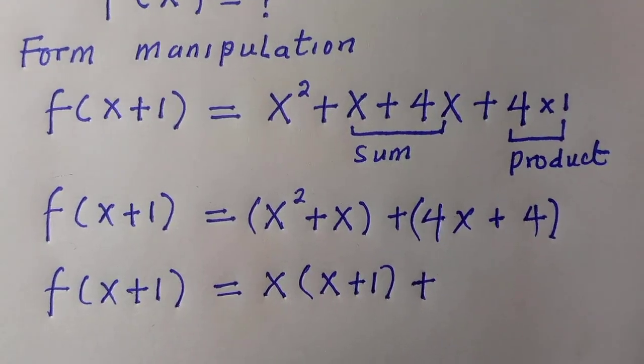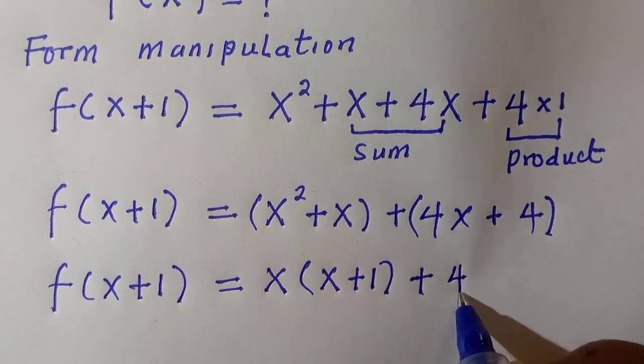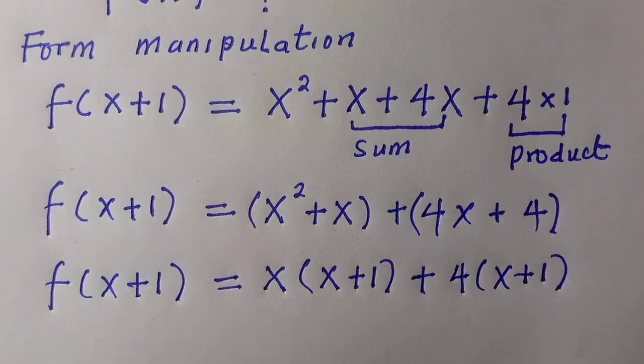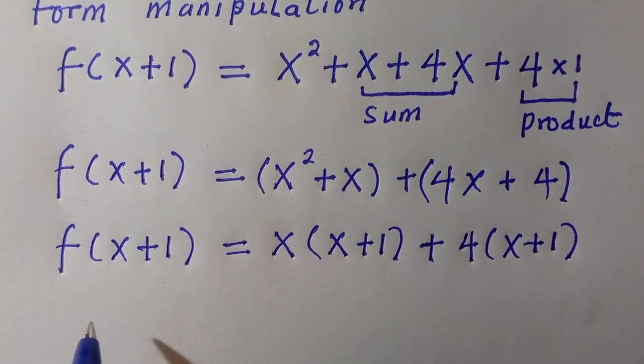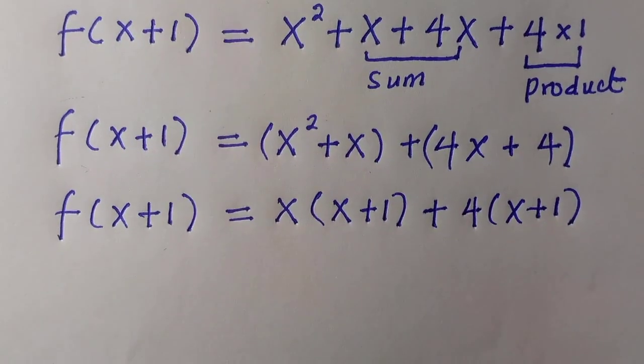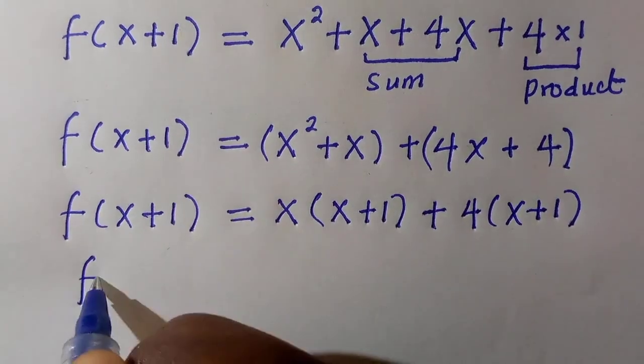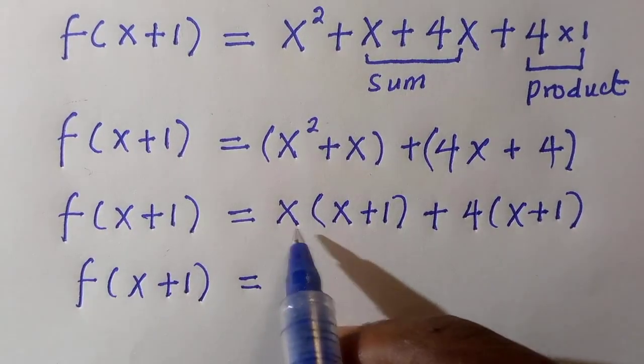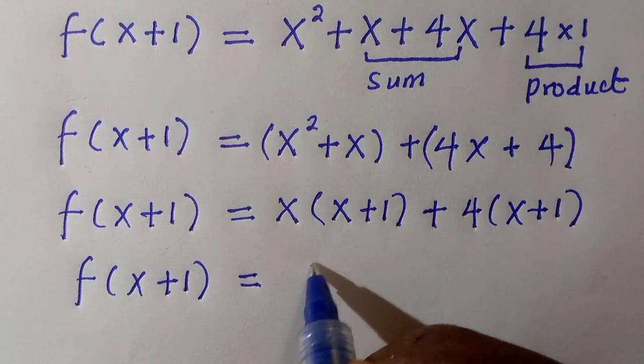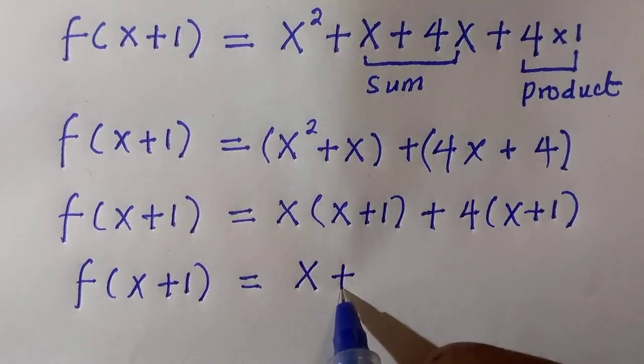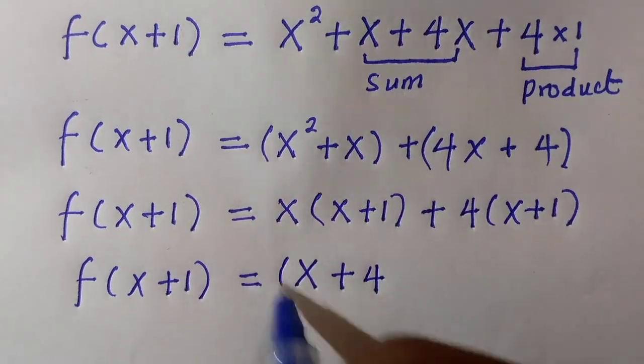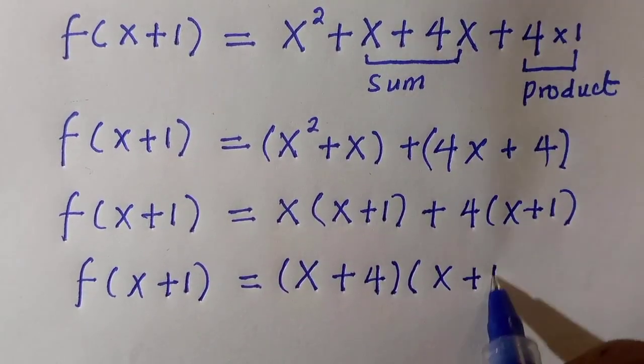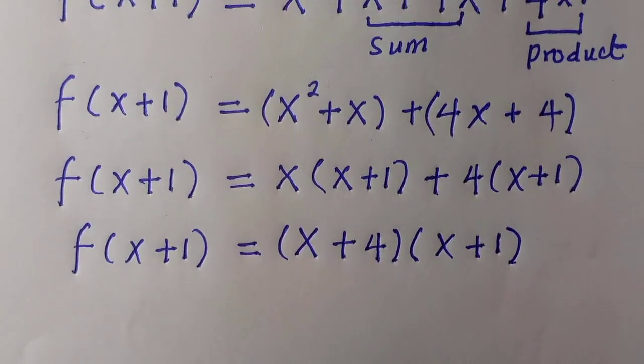by picking out x here which is common, we have x(x+1). Plus, for the second one we have 4 which is common to both of them. By taking it out, we are left with x+1 as well. So therefore, since we have x+1 common at the right-hand side, we are going to take one and combine their coefficient together, which is x and 4.